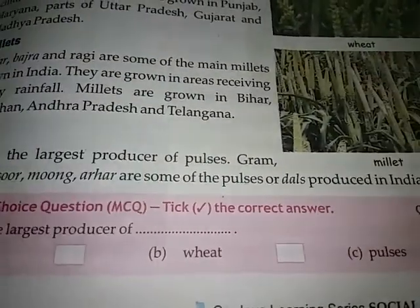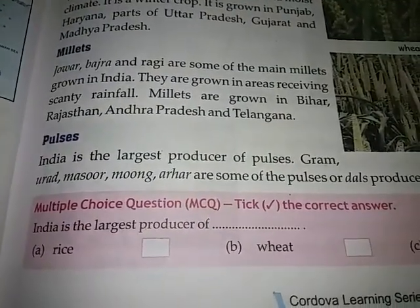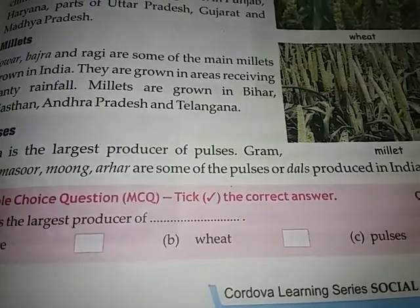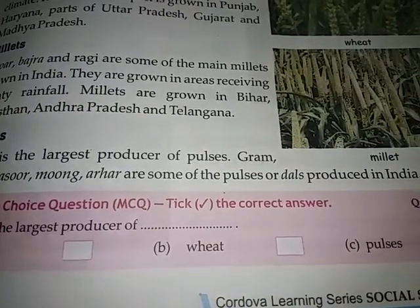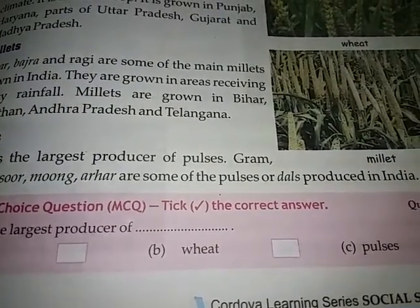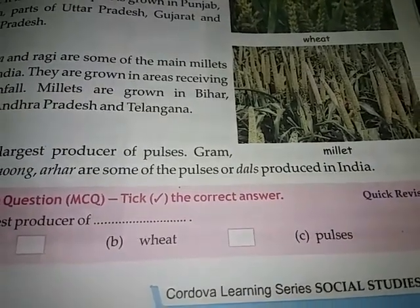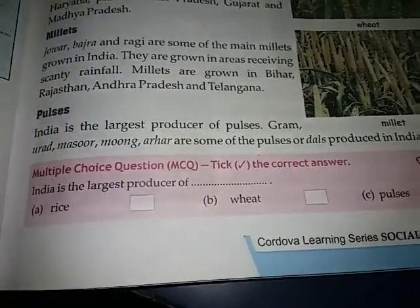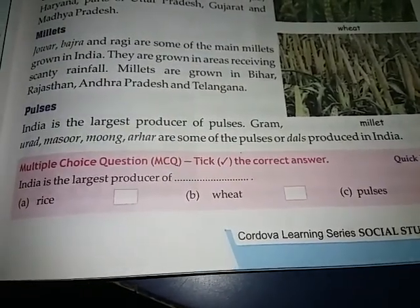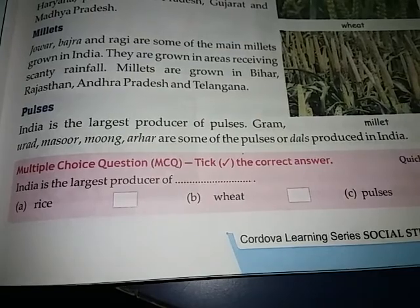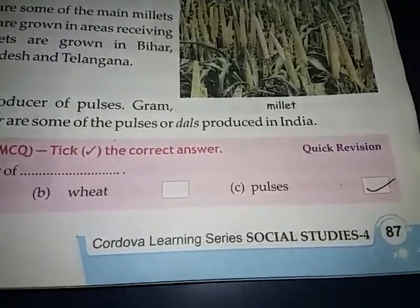Pulses: India is the largest producer of pulses. Gram, Urad, Masoor, Moong and Arhar are some of the pulses or dals produced in India. Now for the multiple choice question: India is the largest producer of blank - the answer is C, pulses.